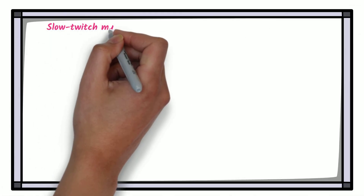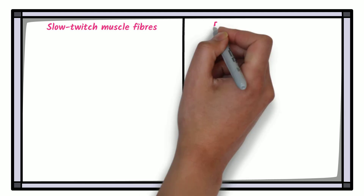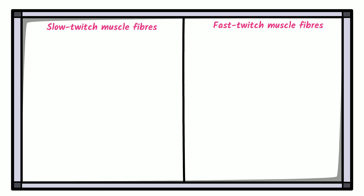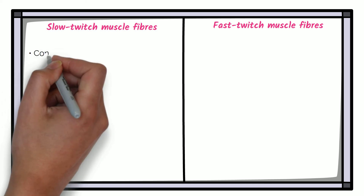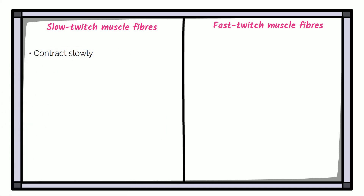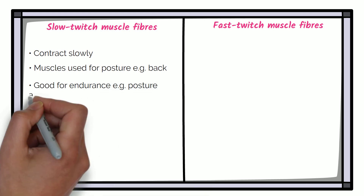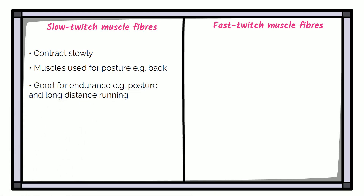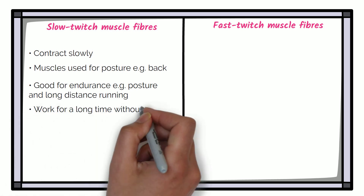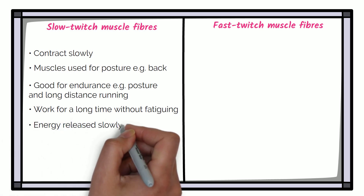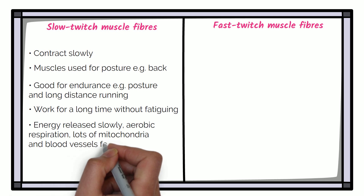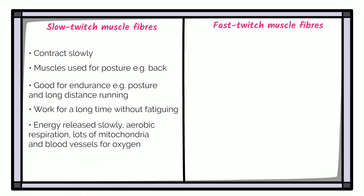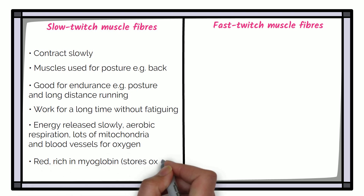Skeletal muscle fibres are made up of fast and slow twitch muscle fibres. Different muscles in the body have different proportions of fast and slow twitch muscle fibres depending on where they are and what they are used for. Slow twitch muscle fibres contract slowly. They are found in muscles used for posture, for example in the back. They are good for endurance, such as posture, sitting straight, and long distance running. They work for a long time without fatiguing, and energy is released slowly through aerobic respiration, with lots of mitochondria and blood vessels for oxygen. These muscles appear red as they are rich in myoglobin, which stores oxygen.